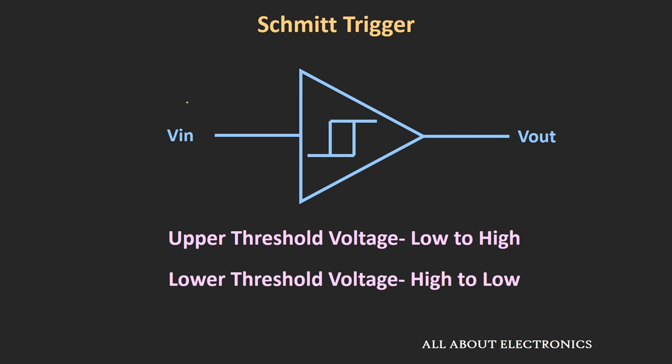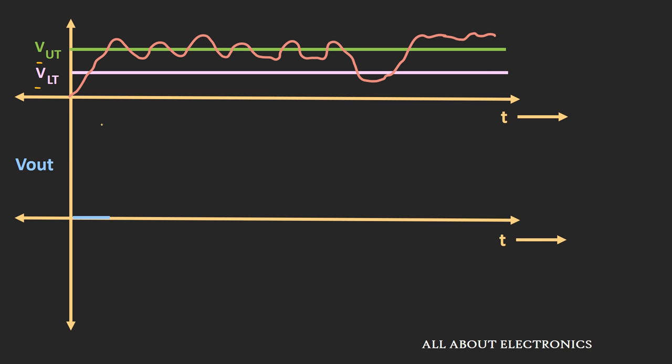Now let's understand how this Schmitt trigger circuit works. The signal represented in red is the input signal, and these two are the upper and lower threshold voltages for the given Schmitt trigger. Initially the input signal is zero and gradually it is increasing. The output of this Schmitt trigger will remain low until the input signal crosses the upper threshold voltage. From that point onward, your output signal will remain high, even if the input deviates around the upper threshold voltage.